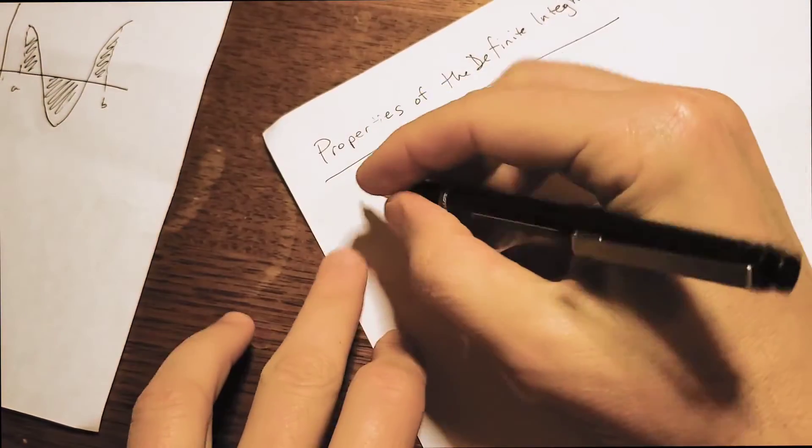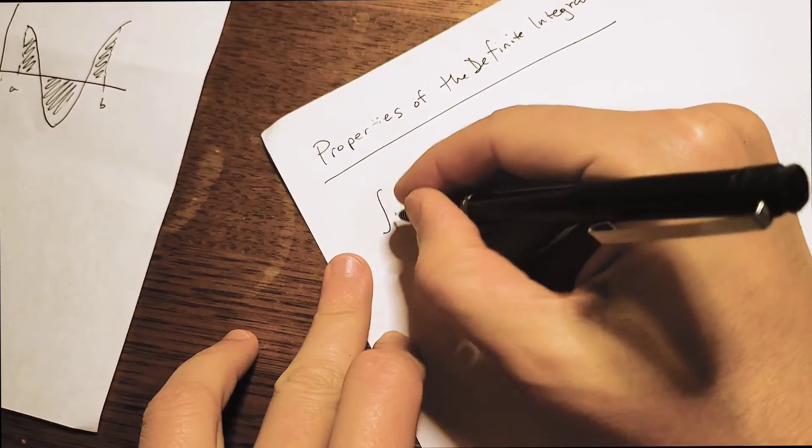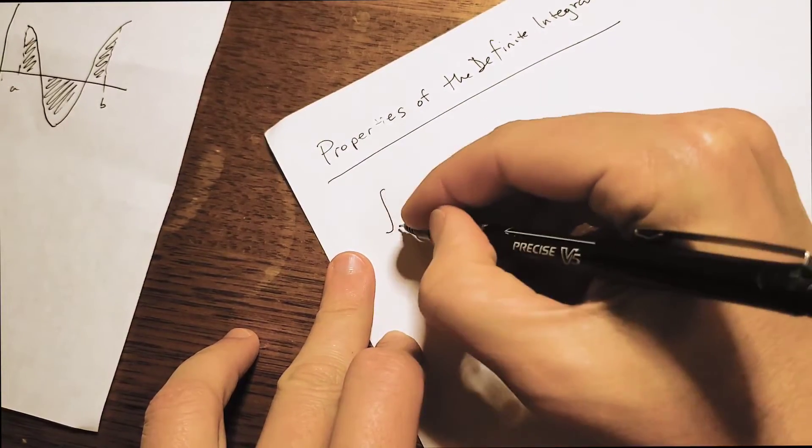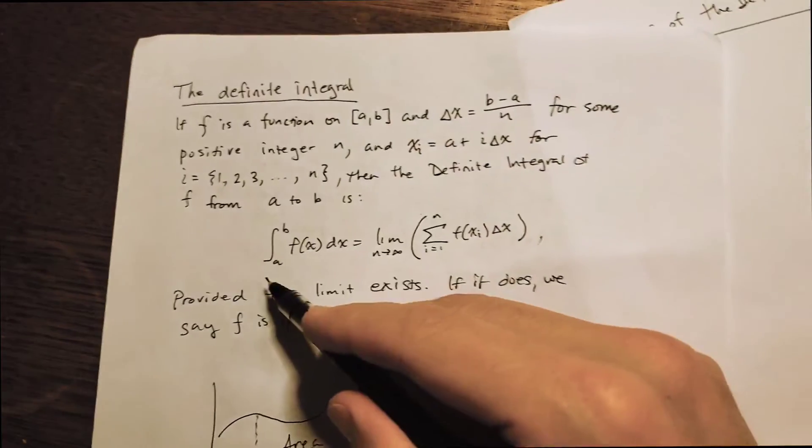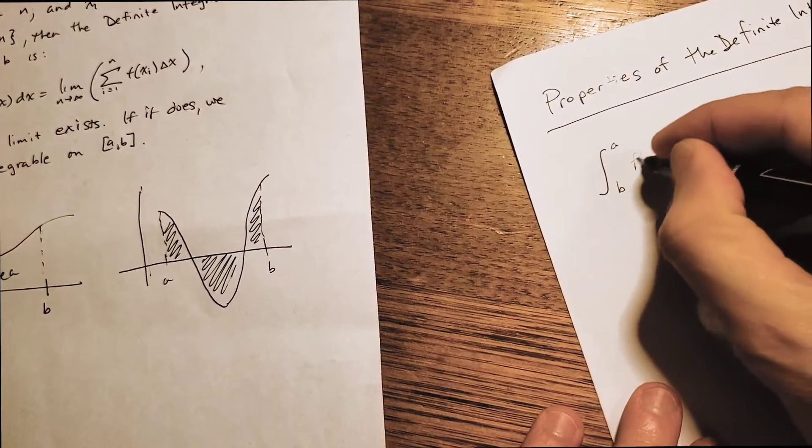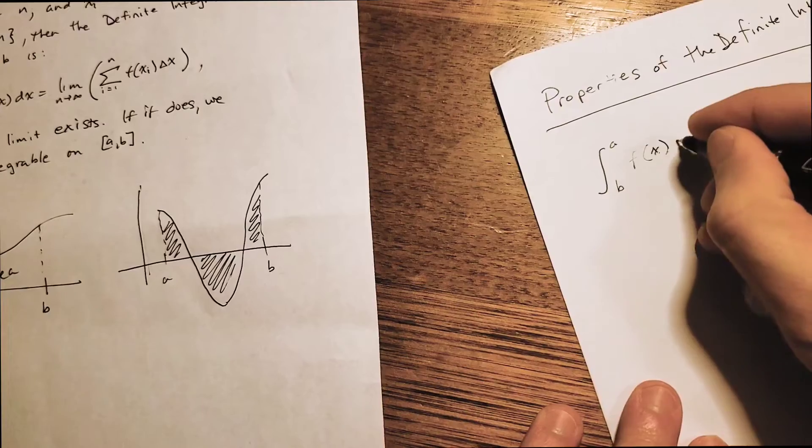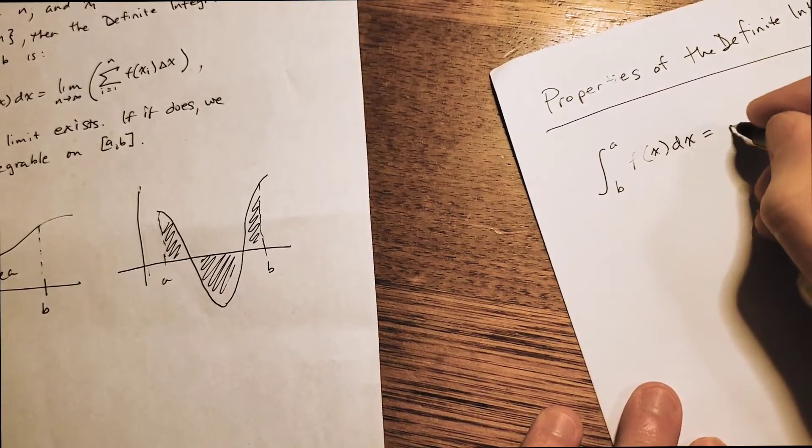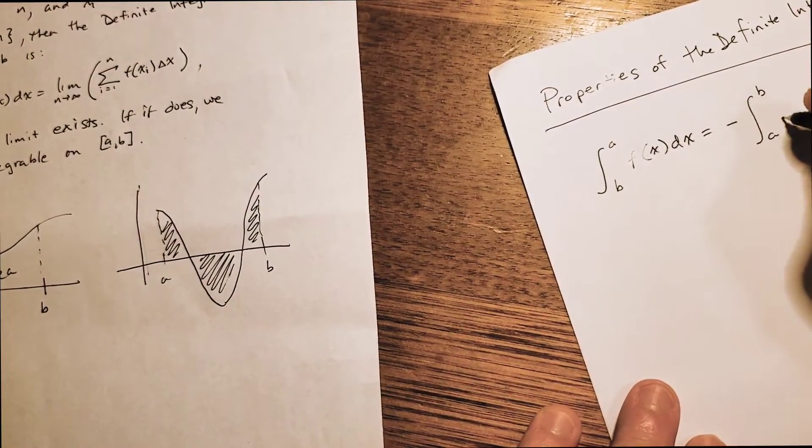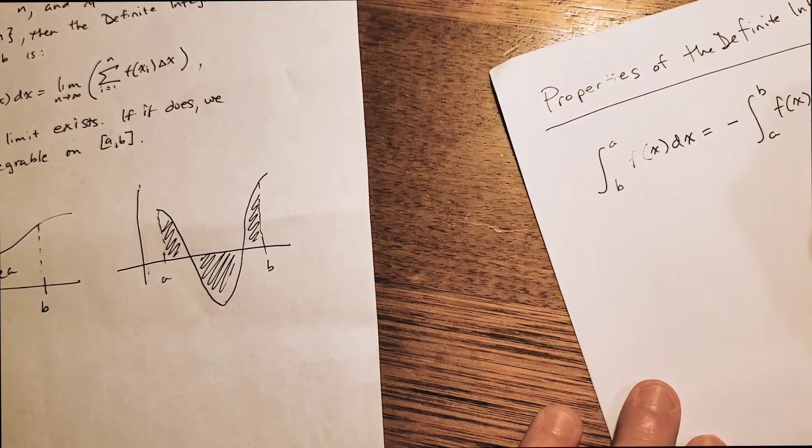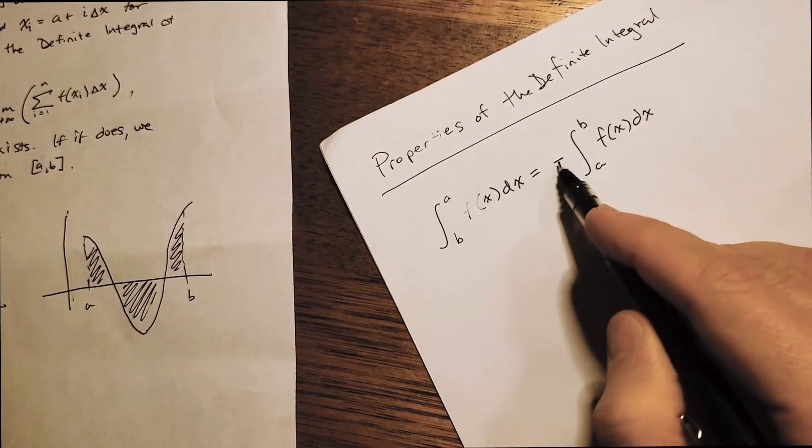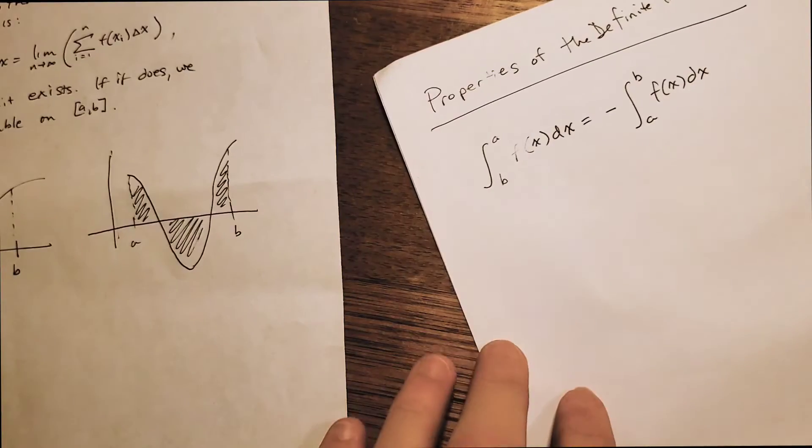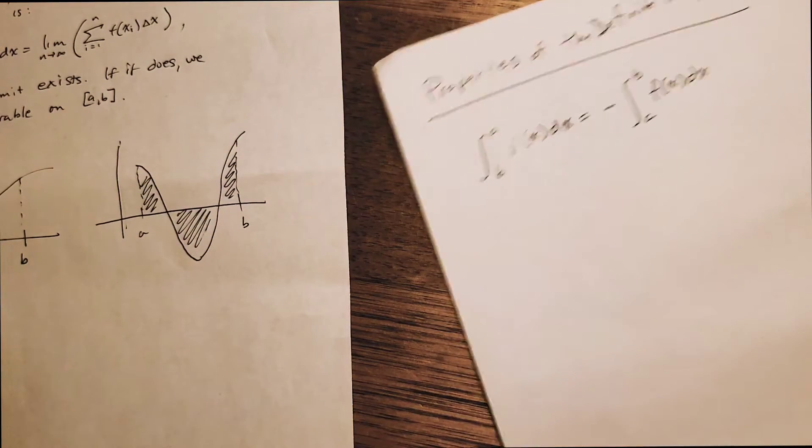So our first property has to do with switching the order of integration. These were the limits of integration we had in our definition from A to B. I'm going to switch it to B to A. And what ends up happening is you end up with the opposite of what you got if you did it in the original order. So here was our original, we've switched the order, we get the opposite of the original. So if the original was positive, it'll be negative. And if it's negative, it will be positive.